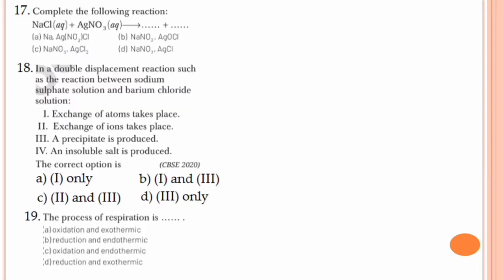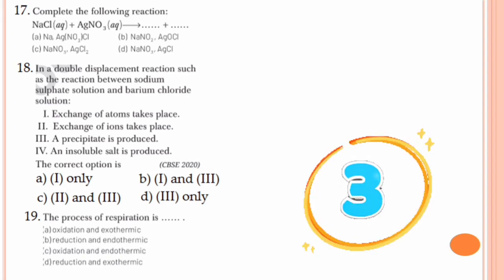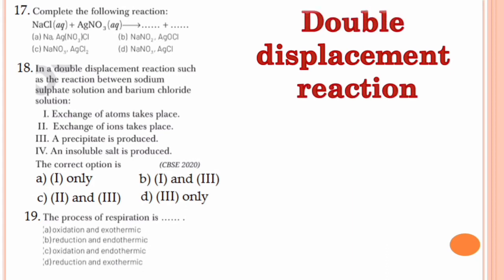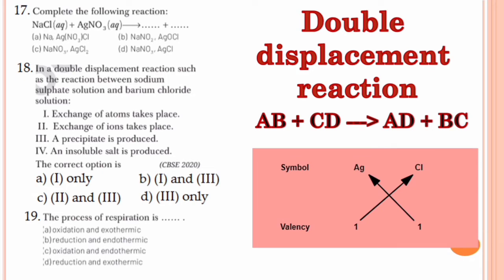Question number 17. Complete the following reaction: NaCl + AgNO3 gives __ + __. This is an example of a double displacement reaction where ions are exchanged among the reactants. The chloride ion and the nitrate ion are exchanged between NaCl and AgNO3. The products formed will be sodium nitrate and silver chloride. Checking the valencies, the formula of silver chloride is AgCl. Only option D has the correct formula, so the correct option is option D: NaNO3 and AgCl.